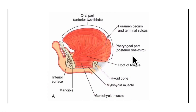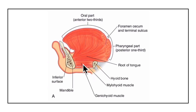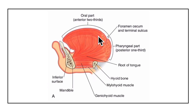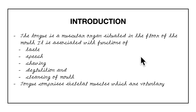Now let's learn about the external features of the tongue. This diagram shows the sagittal cross-section of the tongue. The tongue has basically three main parts: a root, a tip, and a body which is divided into a curved upper surface or the dorsum, and an inferior surface.